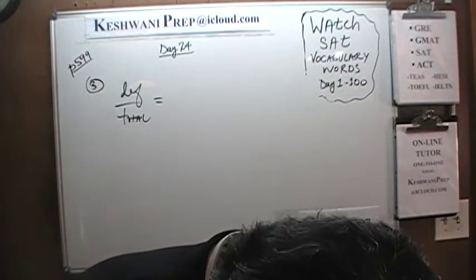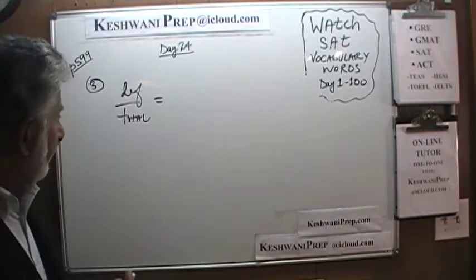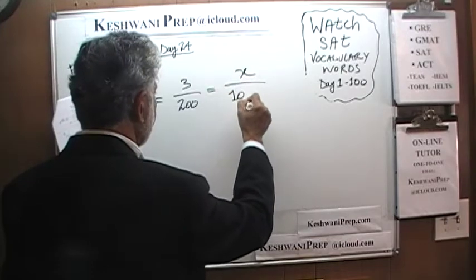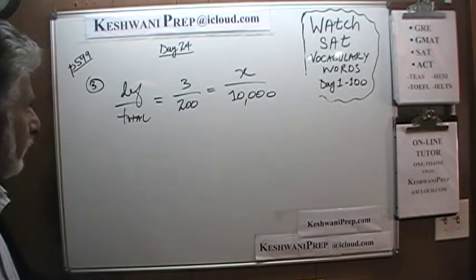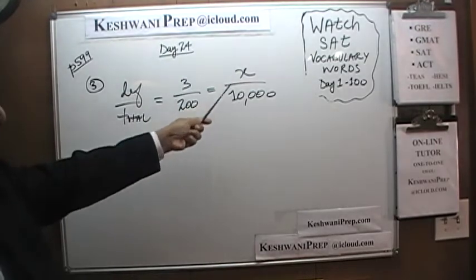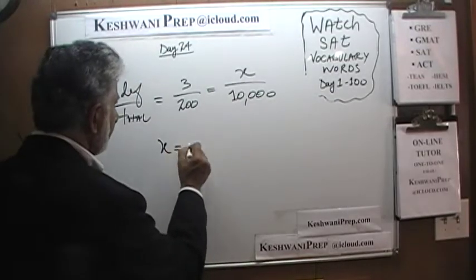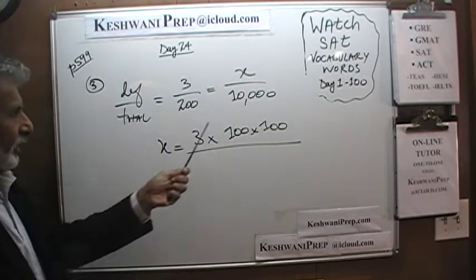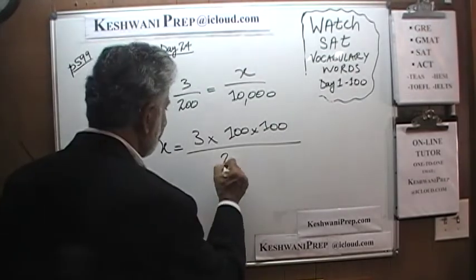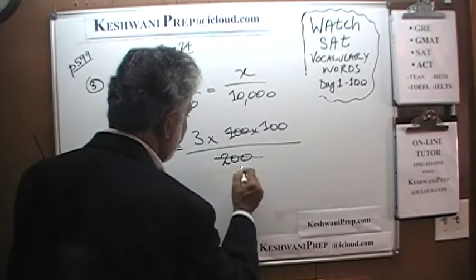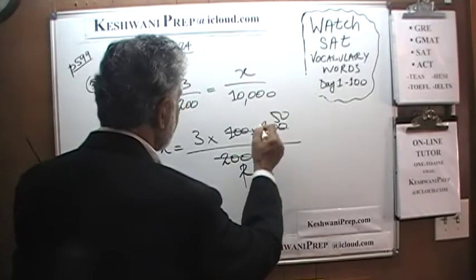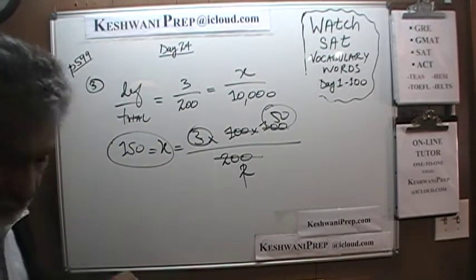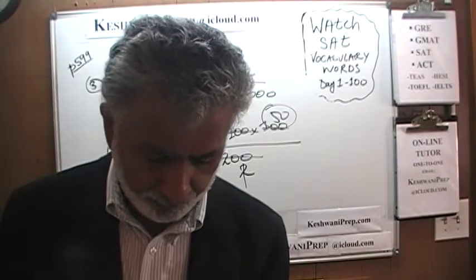So we have three out of 200, and the question is how many out of 10,000. Bring the 10,000 over, so x equals 3 times 10,000 divided by 200. I'll write 10,000 as 100 times 100 to make it easier. Divide top and bottom by 100 to get 2, then divide by 2 to get 50. So x equals 3 times 50, which is 150. The answer is choice A.